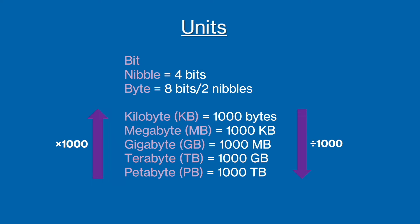First let's look at units. On the screen you can see the units you need to be aware of from smallest to largest, and how you can convert from one to another. Excluding bits, nibbles, and bytes, the general rule is that if you want to go from a smaller unit to a bigger unit, e.g. from kilobytes to megabytes, you would divide by a thousand. However if you wanted to go from say gigabytes to megabytes, you would do the opposite and multiply by a thousand.